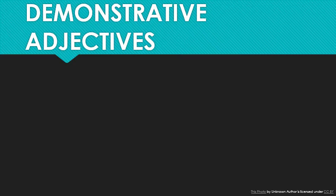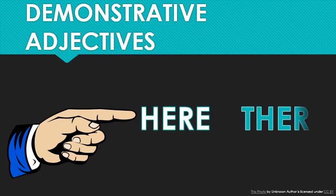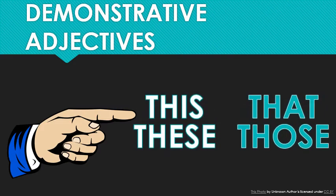Where they differ from articles is that they focus not only on how specific something is, but also how far away it is from the speaker. Is it here or is it there? Is it near or is it far? For things that are close by, you would use 'this' if it's singular — only one — or 'these' if they're plural. This hand, these hands, for example. 'That' and 'those,' again singular and plural respectively, describe things that are further away.